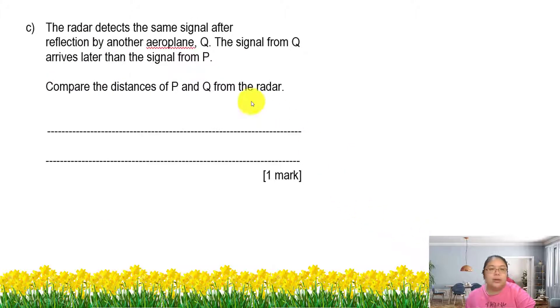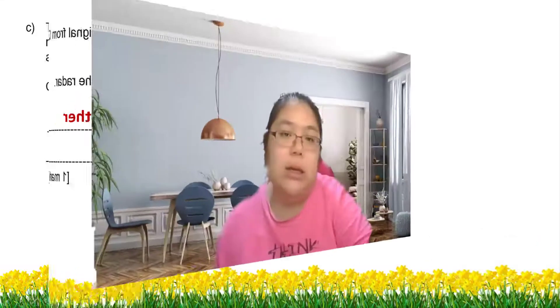The last question. The radar detects the same signal after reflection by another airplane Q. The signal from Q arrives later than the signal from P. Can you compare the distance P and Q? Sure, Q is further because you detect it later. From here we find the distance for airplane Q should be further compared to P.